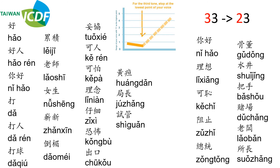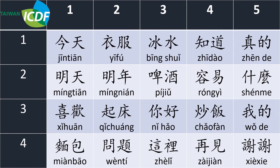There is another variation of the third tone: when two third tones appear together, we change the first third tone to a second tone verbally. For example: 你好，理想，可耻，组织，总统，股董，水井，把守，赌场，老板，所长.